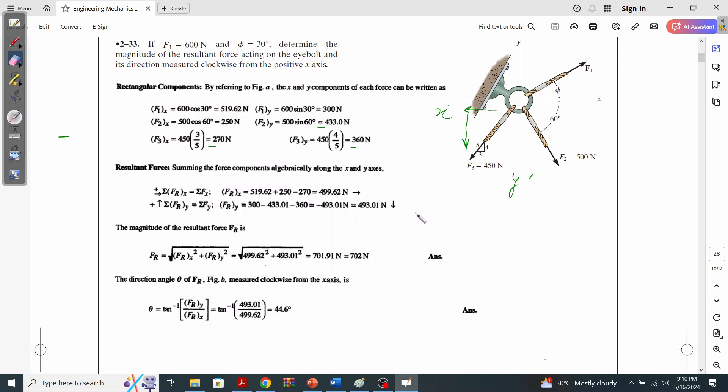Now we can get the resultant from this formula: FR equals the square root of FRx squared plus FRy squared. And here we add it up and we get this as the resultant force. If we see the direction theta of FR, it will be simple: theta equals tan inverse of FRy upon FRx, and this is your FRy and this is your FRx. He gets 44.6 degrees.